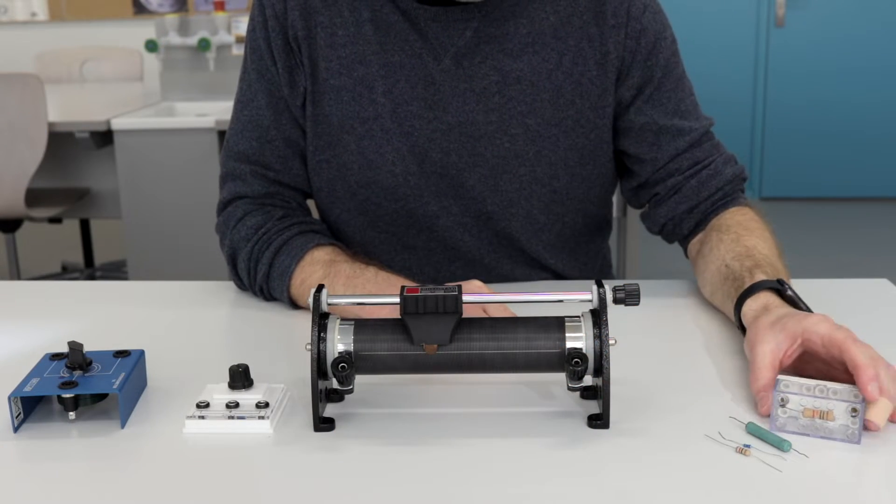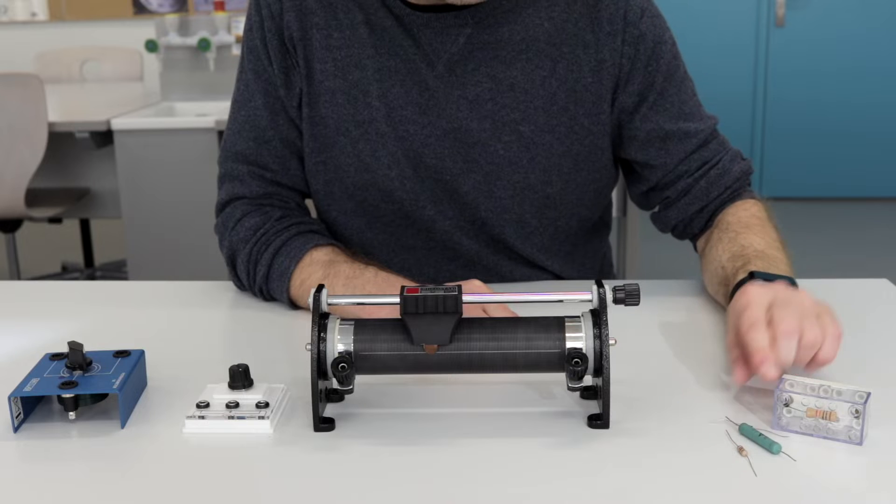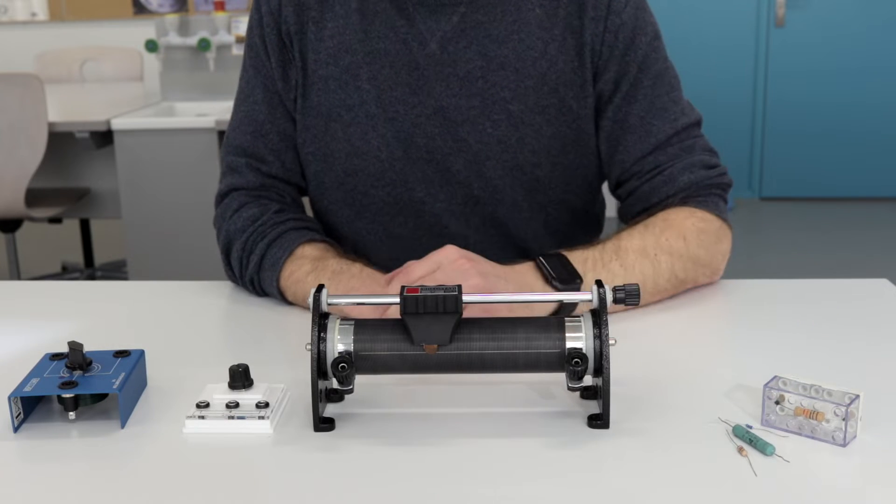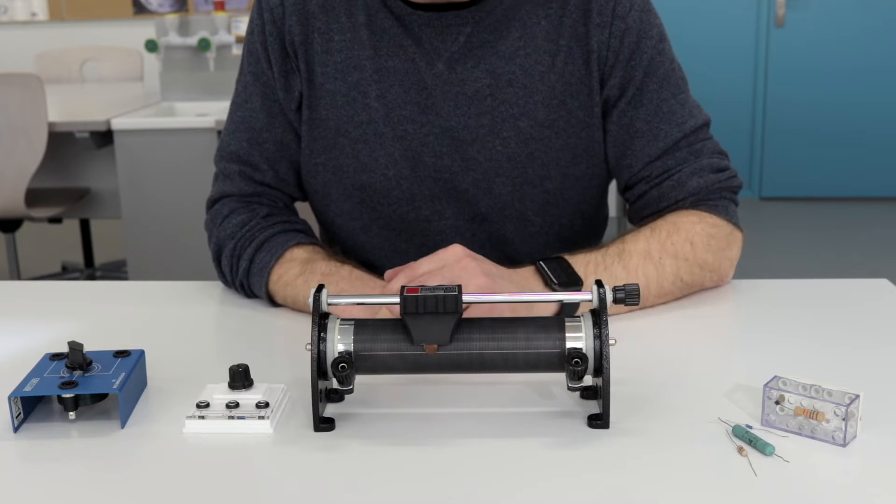Resistors come in different shapes and forms, and I have here a few examples. What they all share in common is the fact that they have a fixed value of their resistance.